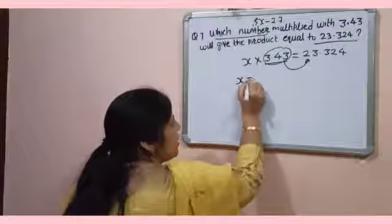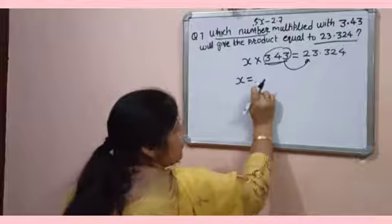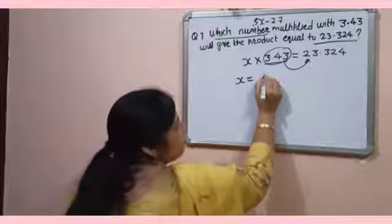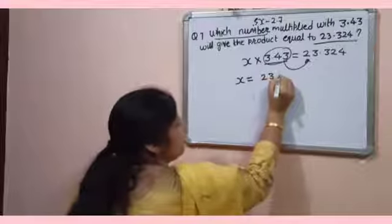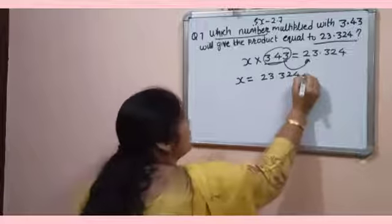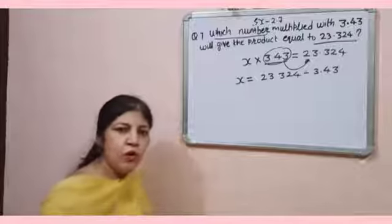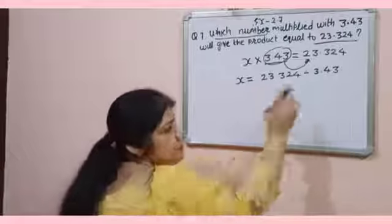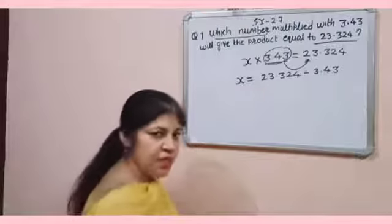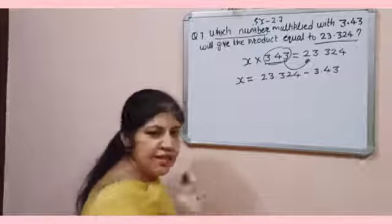So for finding the value of X, you have to shift 3.43. So 23.324 divided by 3.43. Now both numbers are decimal numbers. It means dividend and divisor are decimal number.